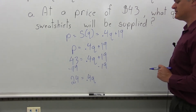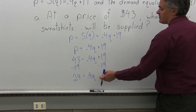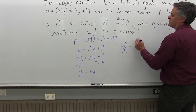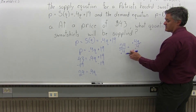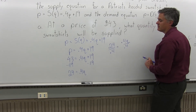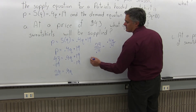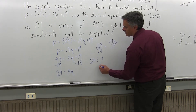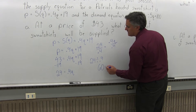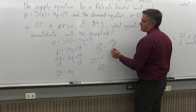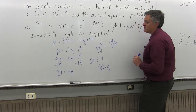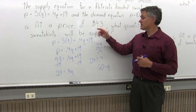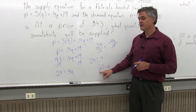The positive 19 and negative 19 cancel. Now to solve for Q, divide out the .4. So I have 24 divided by .4 equals .4Q divided by .4 — dividing both sides by .4. On the left side, the answer is 60. If you don't see it, just use your calculator: 24 divided by .4 equals 60. The .4s cancel on the right, and you have 60 equals Q. So at a price of $43 each, the company will be willing to make a quantity of 60 sweatshirts.